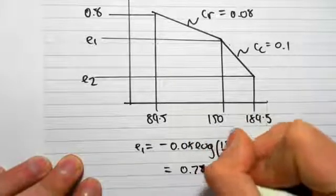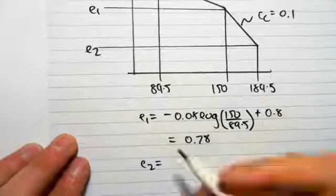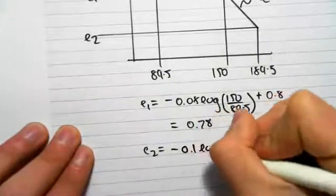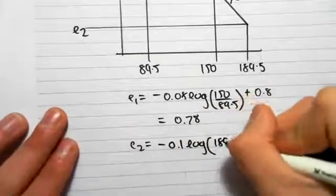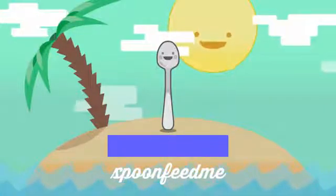We would then find e2, which is the final void ratio, which would be minus cc, so 0.1 log of the final effective stress, which is 89.5.